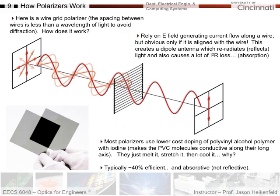Here again are two polarizers that are 90 degrees crossed — where they overlap, both polarizations are blocked. How does each one work? One way to make a polarizer is a wire grid polarizer. It's basically a grid of parallel wires where the key thing is that the spacing between the wires is less than a wavelength of light, to avoid diffraction.